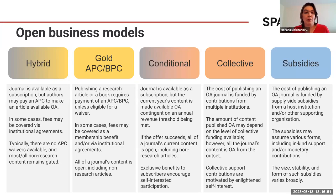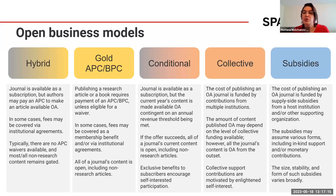What are the open business models? The first is hybrid, where the journal is available as a subscription, but authors can pay a fee — an APC — to make an article open access. Sometimes those fees can be covered by institutional agreements. Hybrid journals usually don't have waivers; if you cannot pay, you go subscription. And most of the non-research content — editorials, etc. — remains gated.